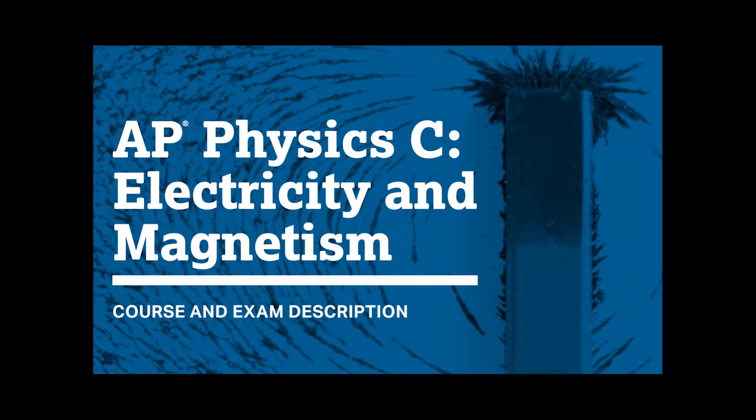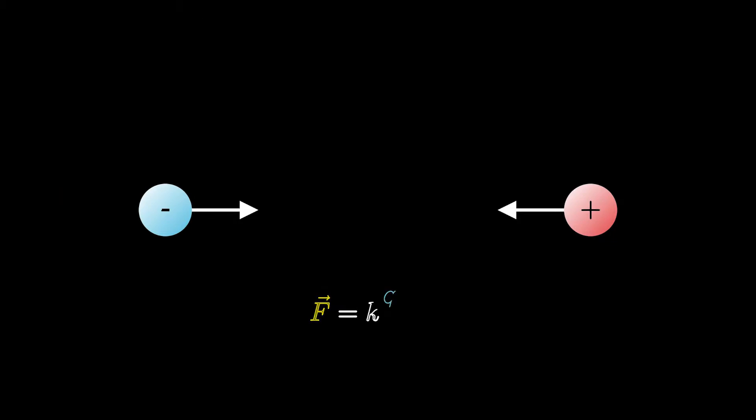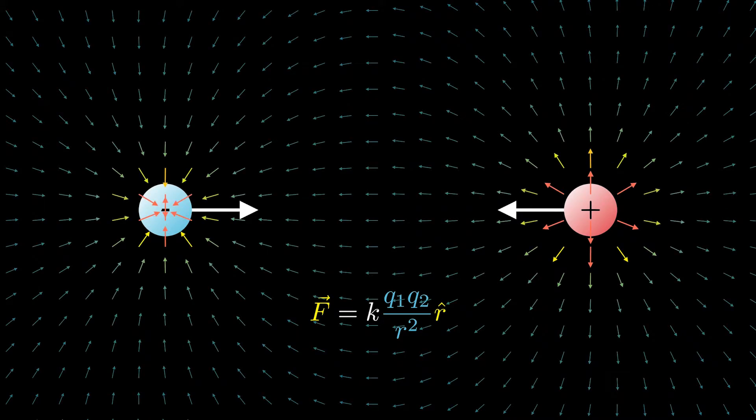High school physics classes are where most people get their first exposure to electricity and magnetism, and one of the first things you learn is finding the force between two point charges. It's just Coulomb's law: F is equal to kq1q2 over r squared, where k is the Coulomb's constant, and the force is directed between the two charges, which the r hat indicates.